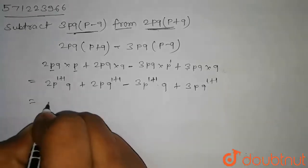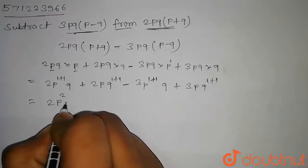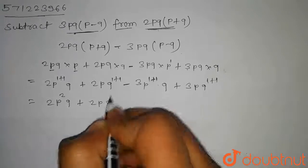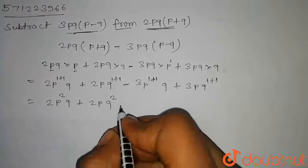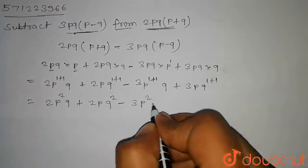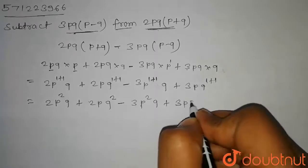Now in solving this we get 2 into p to the power 2 into q plus 2 into p into q to the power 2 minus 3 into p to the power 2 into q plus 3 into p into q to the power 2.